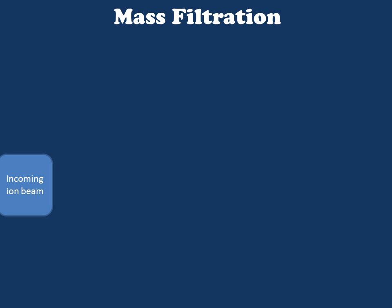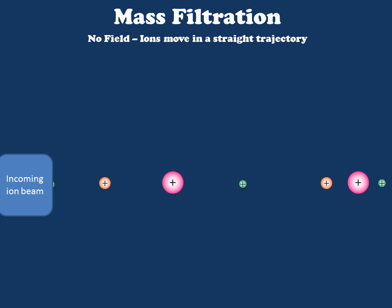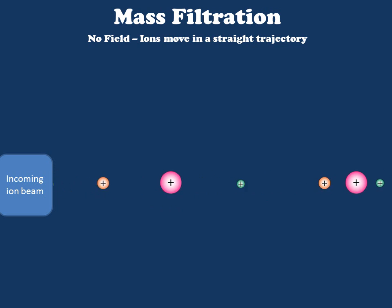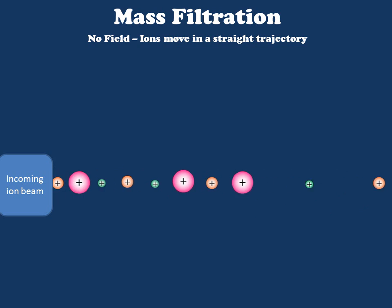Now that we've created our ions, let's move on to the mass filtration or mass analysis step. In this step, the ions which are formed are focused into a beam. If these beams are focused into an area with no appreciable magnetic field, the ions will move in essentially a straight line, which doesn't help us separate them in space. Therefore, we apply a magnetic field to the region through which this ion beam is moving.